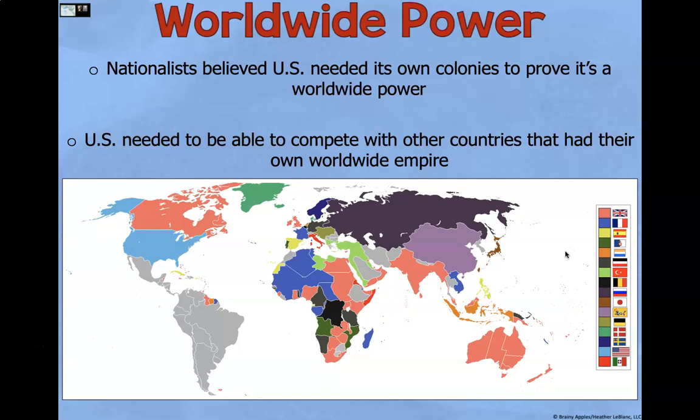Nationalists — someone who is a nationalist is a person who is all for their country. They believed the US needed its own colonies to prove it is a worldwide power. It says the US needed to be able to compete with other countries that had their own worldwide empire. At the time, Great Britain had already colonized a lot of Africa.